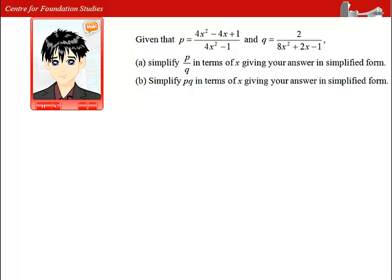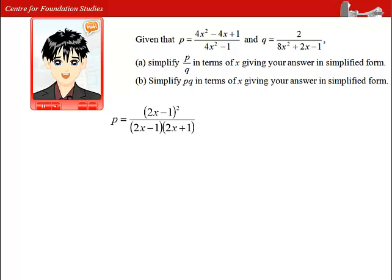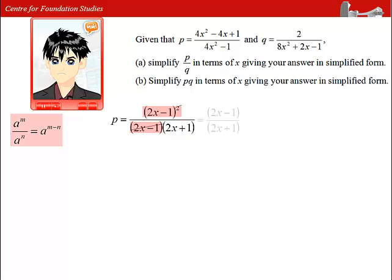To simplify p, we first have to obtain the factorized form of the numerator expression and denominator expression. Then, we make use of an exponent rule which simplifies the quotient of two terms of the same base. p is simplified into a manageable fraction.